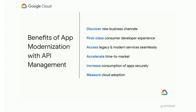Before we wrap up, let's look at the key benefits of leveraging API management in your application modernization journey. First, you'll be able to discover new business channels — by exposing your business capabilities as APIs, your consumer developers such as third-party developers, partners, or citizen developers will be able to create new experiences for your end users. Your consumer developers get a first-class developer experience from day one of your modernization journey by coming to your developer portal and interacting with the APIs. You can access legacy and modern services seamlessly using APIs, and you can measure cloud adoption by seeing how much traffic is going to your legacy services versus microservices running in the cloud.